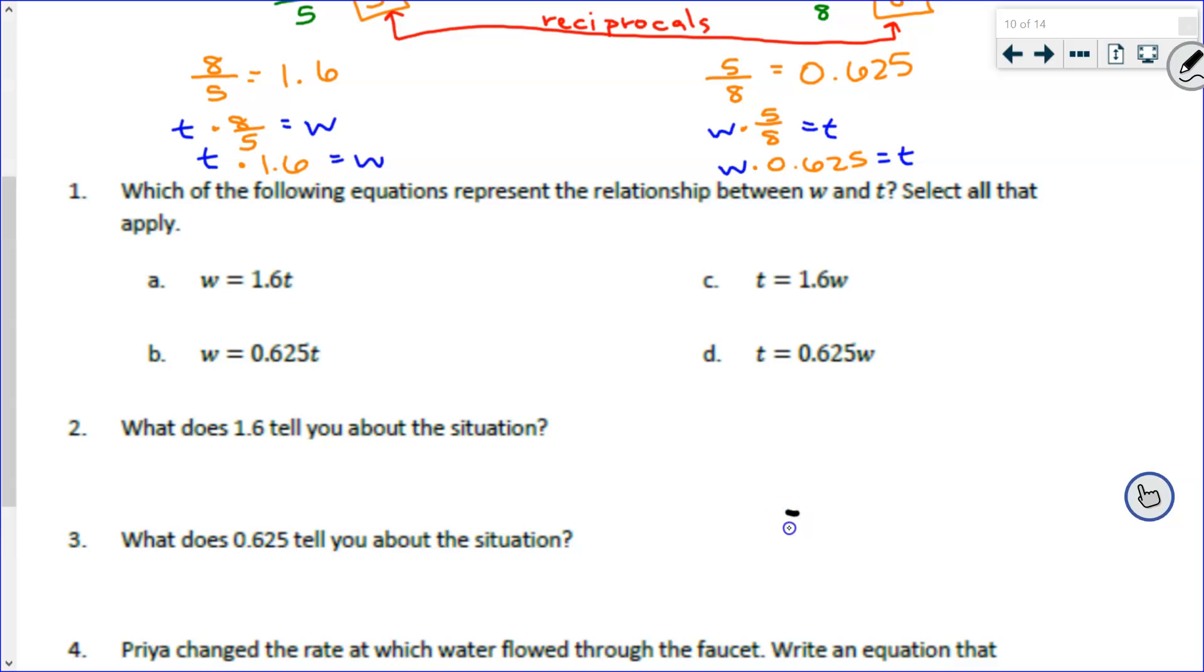All right, tell me one of the equations, just one, that is correct. A, B, C, or D? Let's start with Gavin R. C is correct. Who agrees? Who disagrees? More that disagree. So let's talk about why we think it is, Gavin.